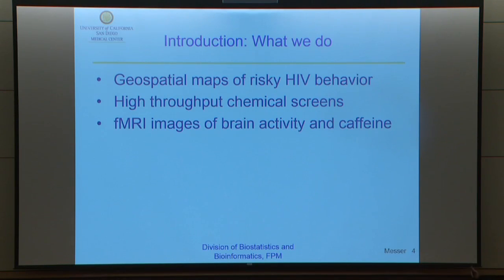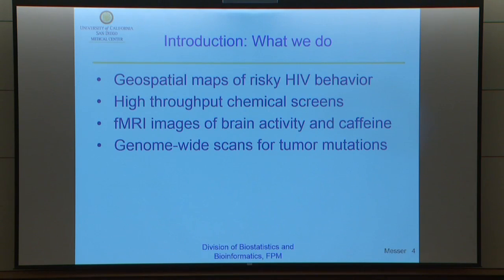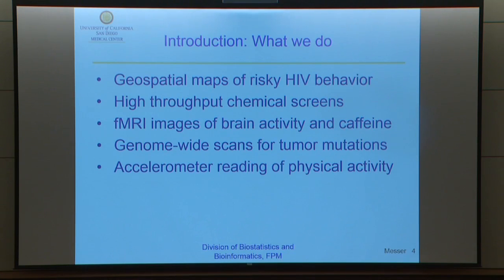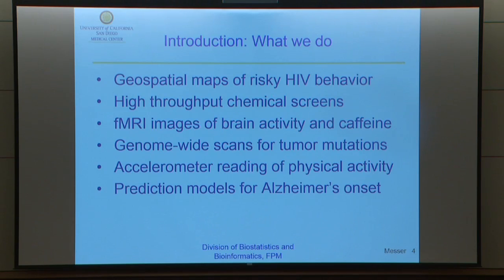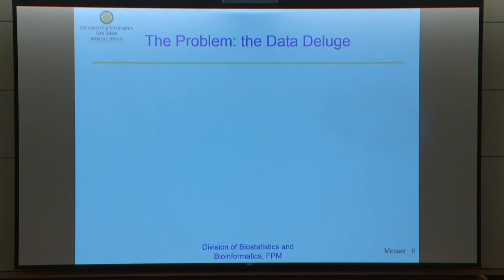fMRI images — I like this one of brain activity and caffeine, so what happens to your brain when you drink caffeine? That's very interesting. Genome-wide scans for tumor mutations — we have an expert in our audience on that as well, Kelly Frazier. Accelerometer reading of physical activity, a physical activity intervention where they chip you with all kinds of stuff that records your every move, and you wear a camera so they see what you eat. That creates reams of data, and there are very interesting computer science interfaces there. Prediction models for Alzheimer's onset, cancer onset, metabolomic biomarkers of disease.